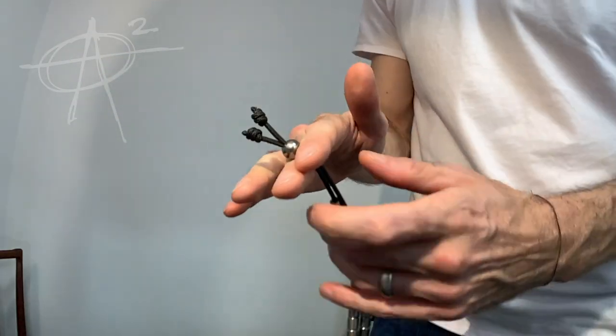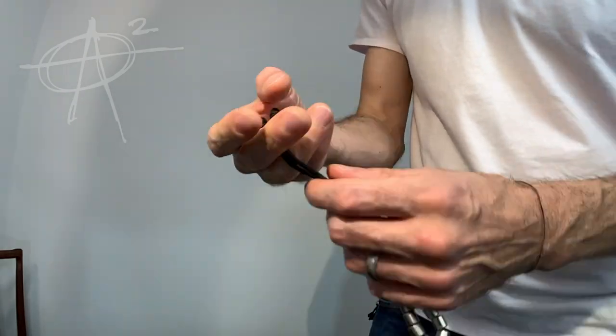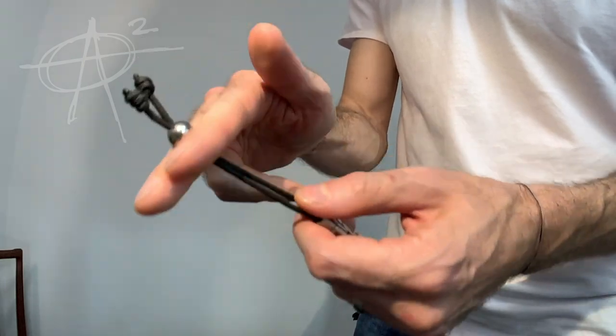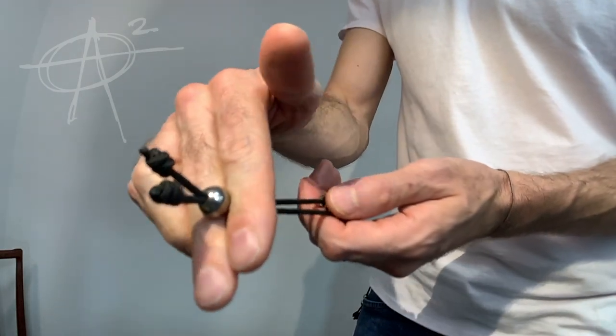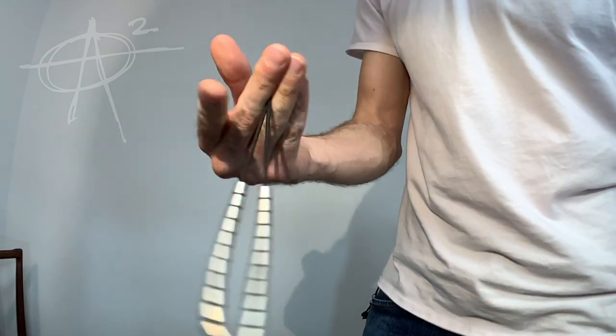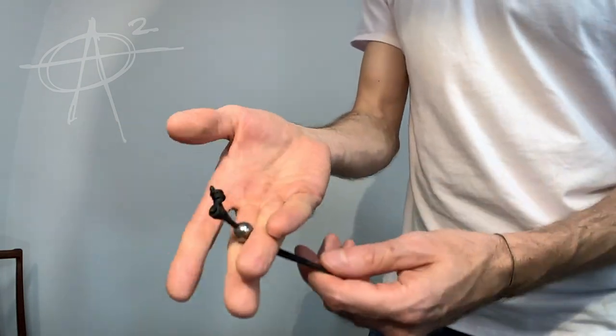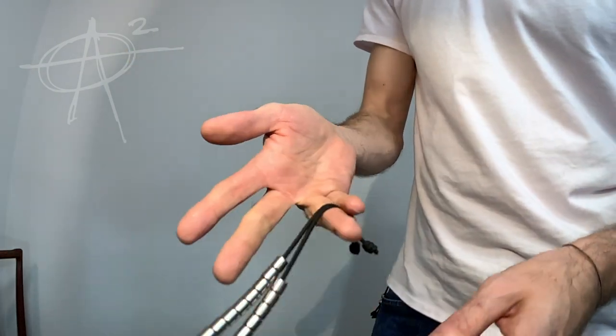You can do it from the fakie position to a regular position, or from a regular position to a fakie position. And incidentally, that's where the term half cab comes from. It's a term borrowed from skateboarding, where you go from the fakie stance into a regular stance.